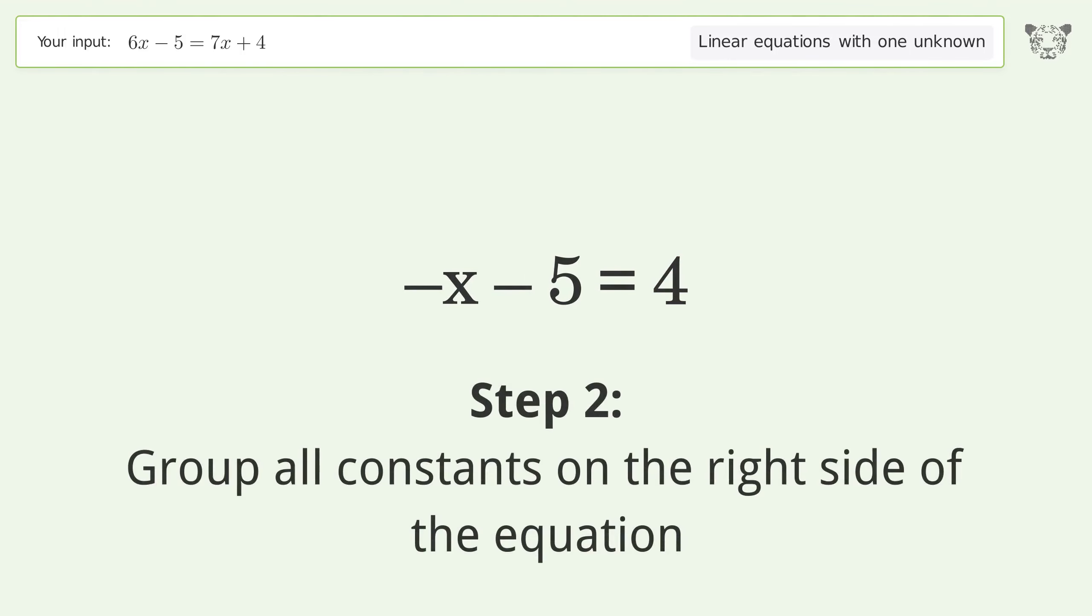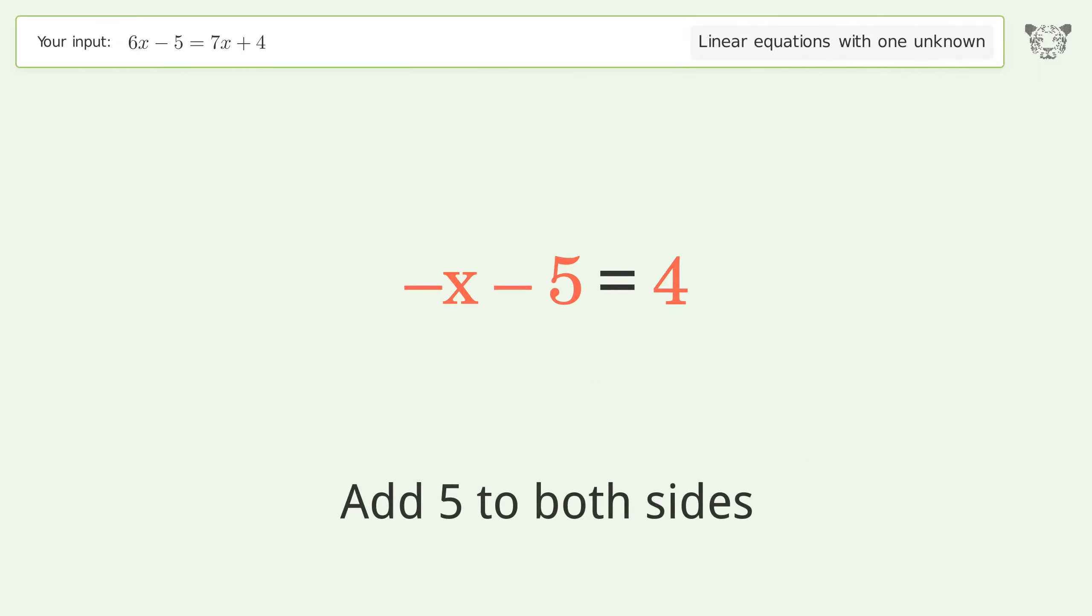Group all constants on the right side of the equation. Add 5 to both sides. Simplify the arithmetic.